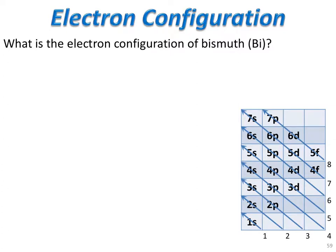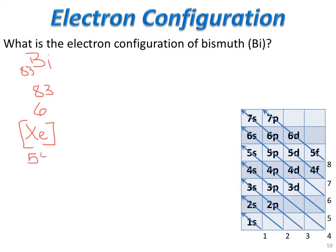Let's do the electron configuration of bismuth, which is element 83, so we have 83 electrons to place. Bismuth is in period number 6. Going up to period number 5 and looking at the noble gas at the end of that period, we find the noble gas is xenon. Xenon is element number 54, so it uses up 54 of the 83 electrons, leaving about 29 more electrons to be added.